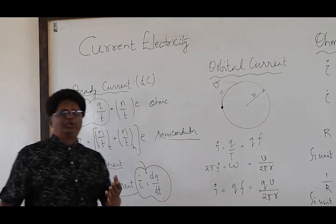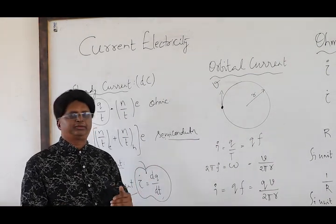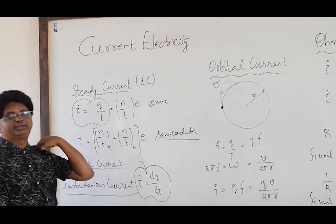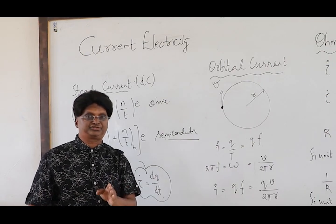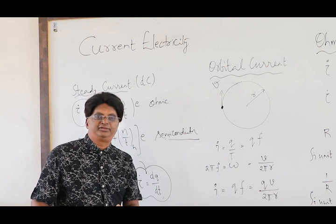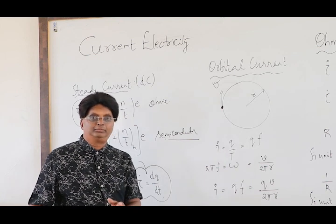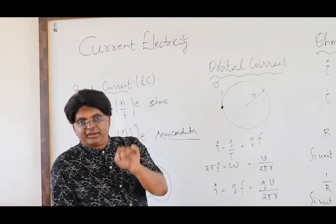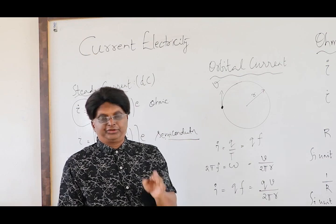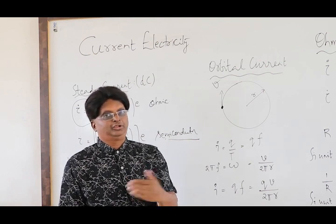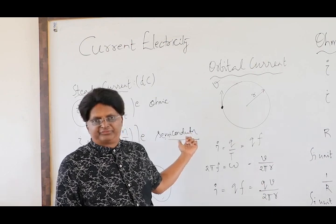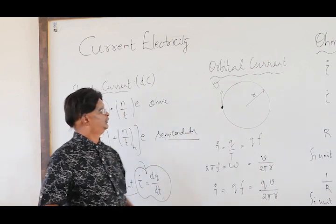Current is a scalar quantity. Current has magnitude and direction — conventional current always goes from higher potential to lower potential, so there is a direction sense — but it is a scalar. Because possessing direction alone is not a requirement for a physical quantity to be a vector; it should also obey special laws of addition such as the triangular law or parallelogram law. Electric current does not satisfy that, and therefore current is a scalar quantity.